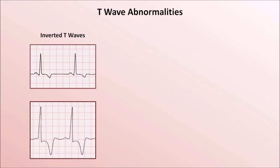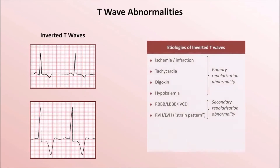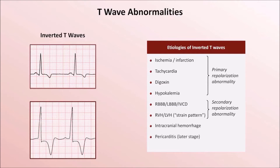There are many etiologies of inverted T waves. This list largely overlaps with those etiologies causing ST depressions. The three major additions include intracranial hemorrhage — in which case the T wave inversions are occasionally extremely dramatic — late stage pericarditis, and hypothyroidism.